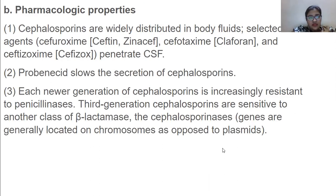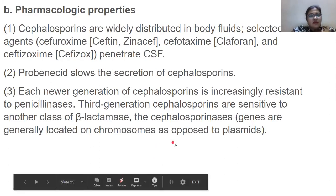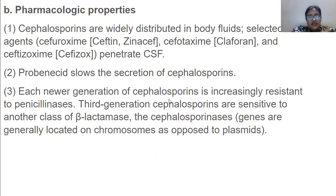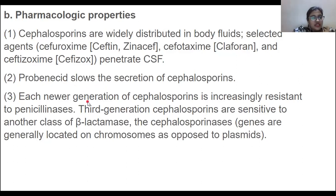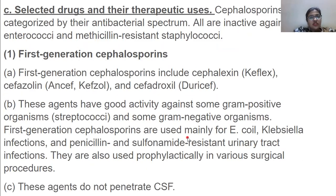Regarding pharmacological properties, cephalosporins are widely distributed in body fluids, and selected agents penetrate CSF. Probenecid slows the secretion of cephalosporins. Each newer generation of cephalosporin is increasingly resistant to penicillinase. Third generation cephalosporins are sensitive to another class of beta-lactamase called cephalosporinases, and the genes are located on the chromosomes.